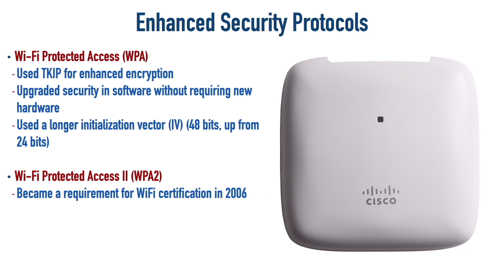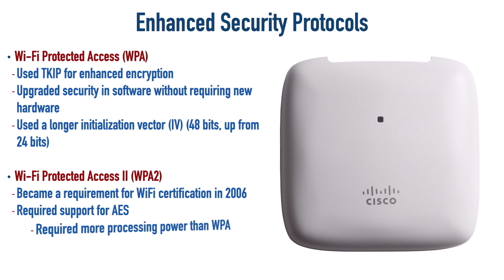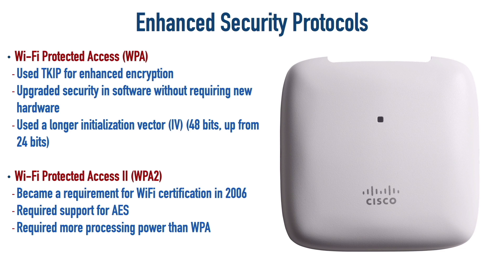After WPA came WPA2 — Wi-Fi Protected Access 2. As of 2006, in order to be certified by the Wi-Fi Alliance, a device had to support WPA2. If a device supported WPA2, there is a requirement that it support AES. AES is going to require more processing power than TKIP, so WPA2 can be more processor-intensive than WPA. But you can configure many WPA2 access points to turn off AES and run TKIP, or enable both — so older clients can use TKIP and newer clients can use AES. The best practice today is for everybody to use AES.